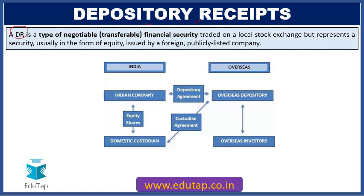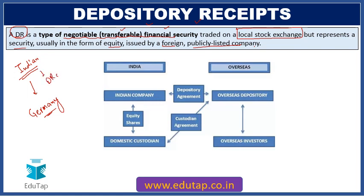A depository receipt is a type of negotiable — that means transferable — financial security. It is traded on a local stock exchange but represents a security, usually in the form of equity, issued by a foreign publicly listed company. For example, if there is an Indian company whose shares are being traded in another country such as Germany, they are converted into depository receipts for the purpose of that trading in Germany.